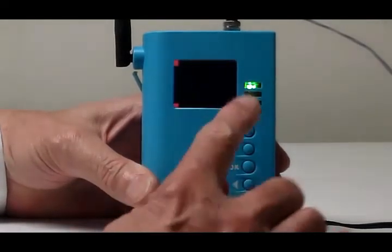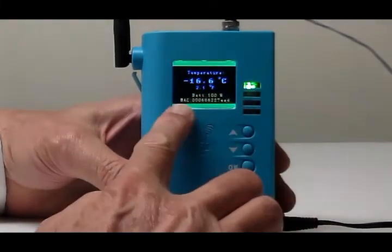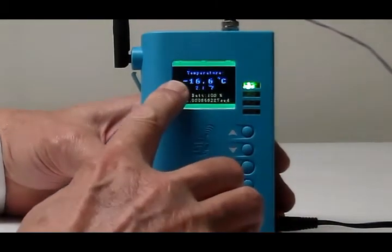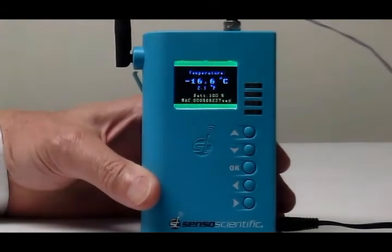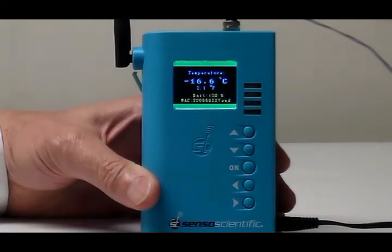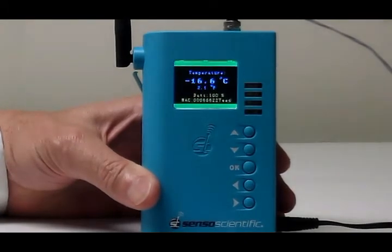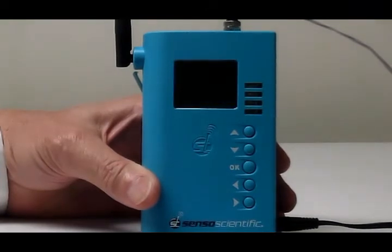And then the top light is flashing green and the screen goes green and it shows you the reading of the temperature. This unit's actually installed in a freezer and you can see the temperature is minus 16.6 degrees C. So that's all there is to it. Shortly that will go off and the unit will go back to sleep. So it's now working.